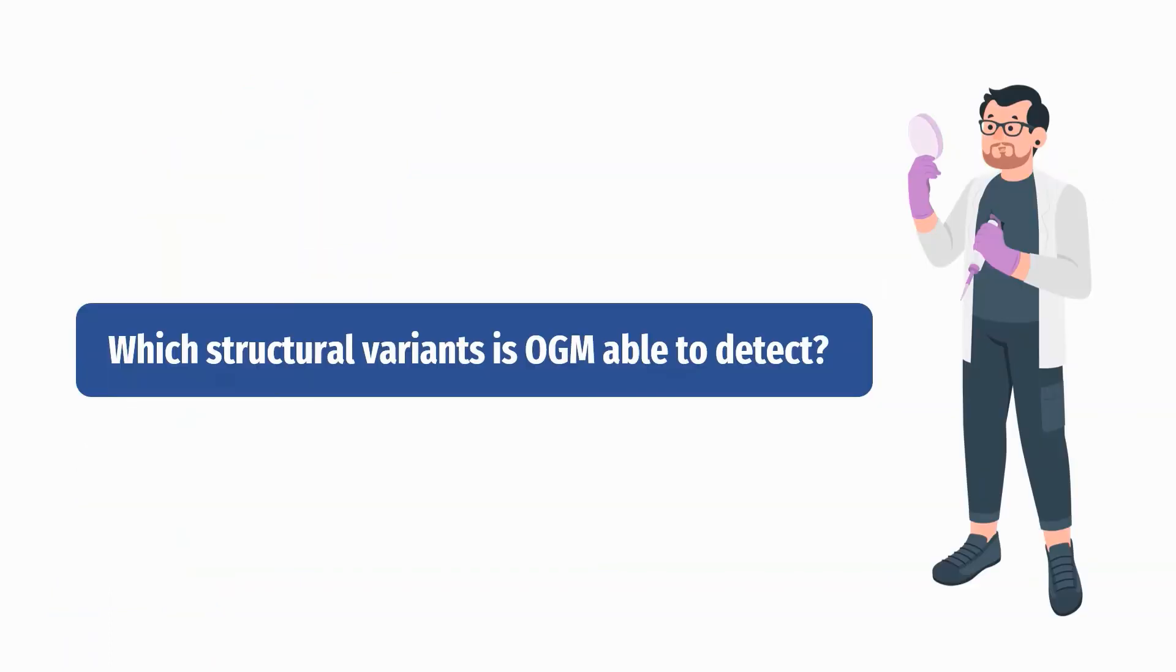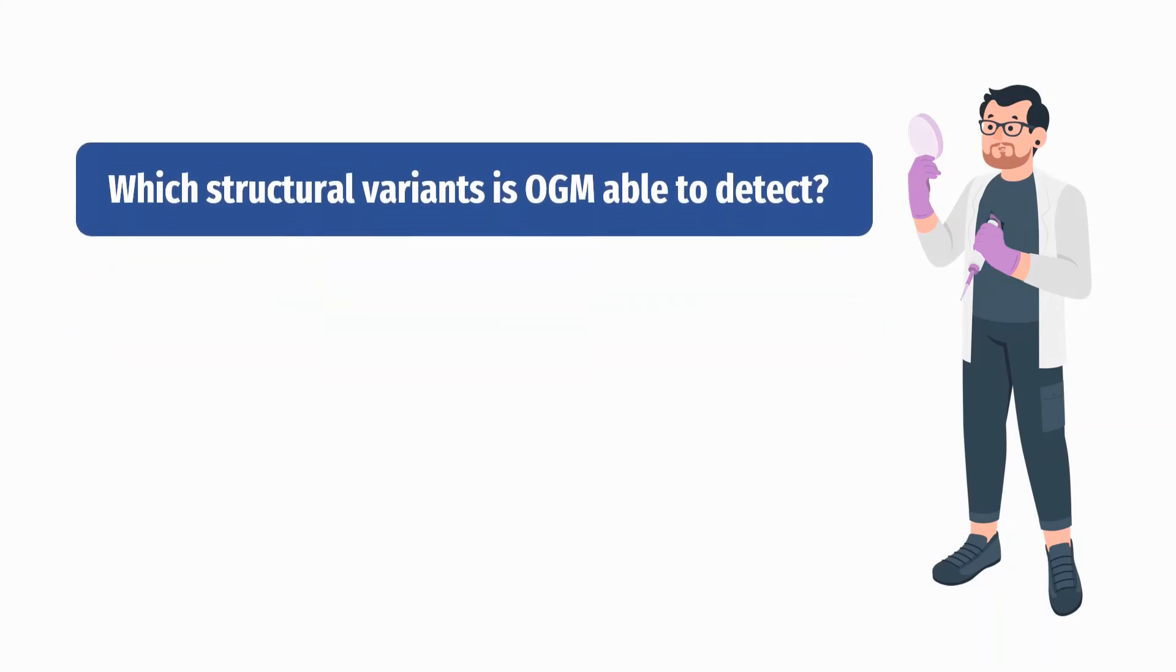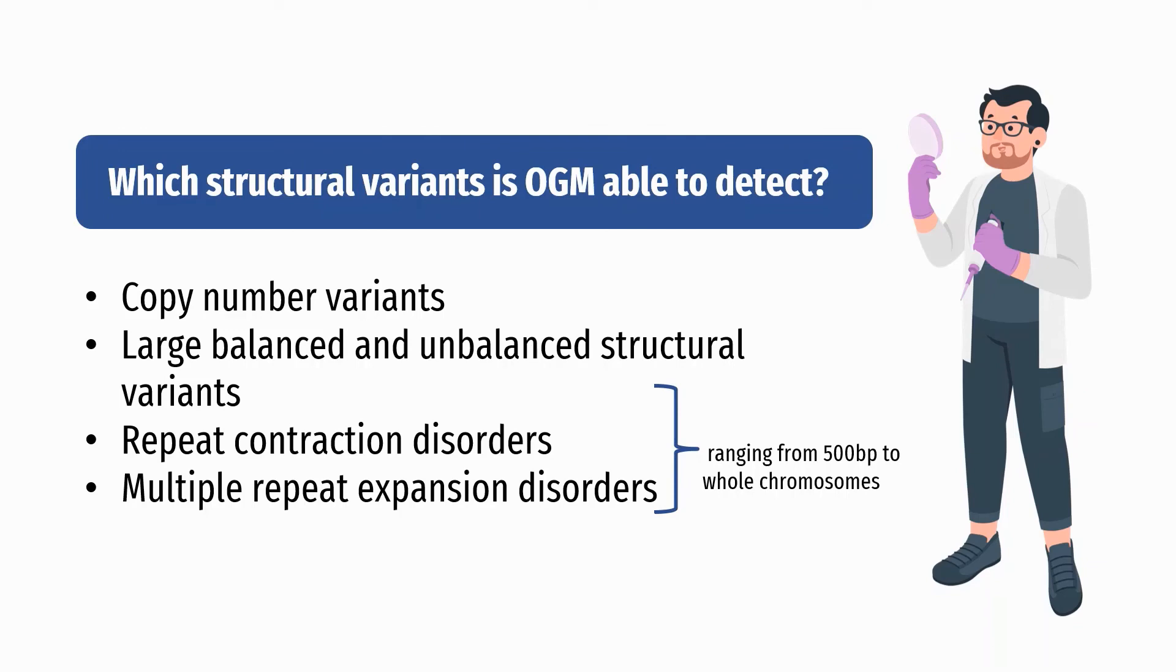Which structural variants is OGM able to detect? Optical genome mapping can detect copy number variants, large balanced and unbalanced structural variants, repeat contraction disorders, and multiple repeat expansion disorders, ranging from 500 base pairs to whole chromosomes.